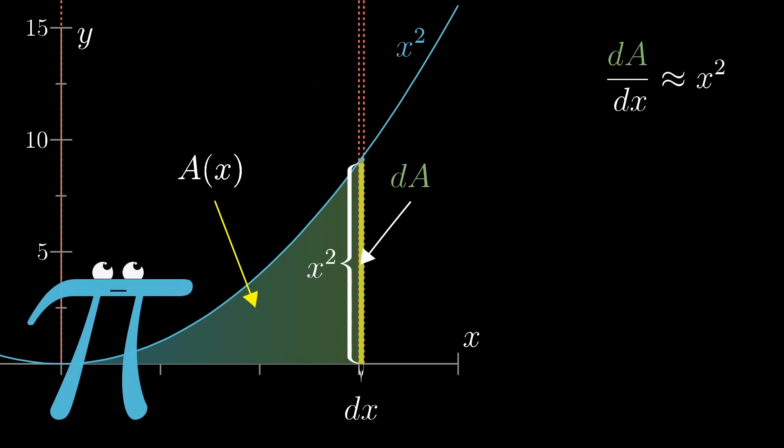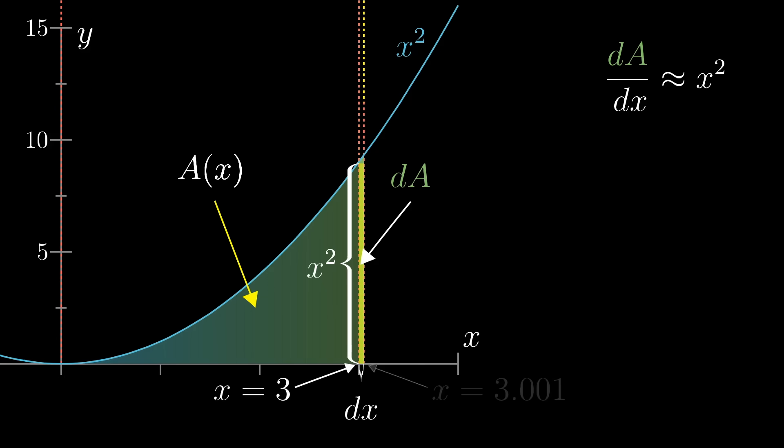In other words, we don't know what A is, that remains a mystery. But we do know a property that this mystery function must have. When you look at two nearby points, for example 3 and 3.001, consider the change to the output of A between those two points, the difference between the mystery function evaluated at 3.001 and evaluated at 3.